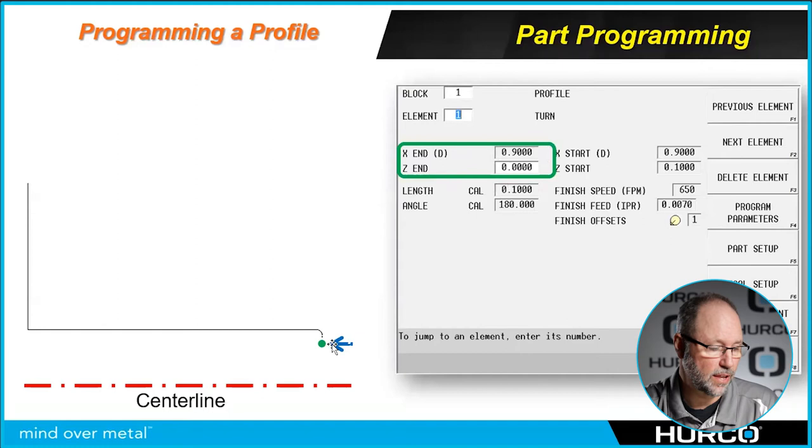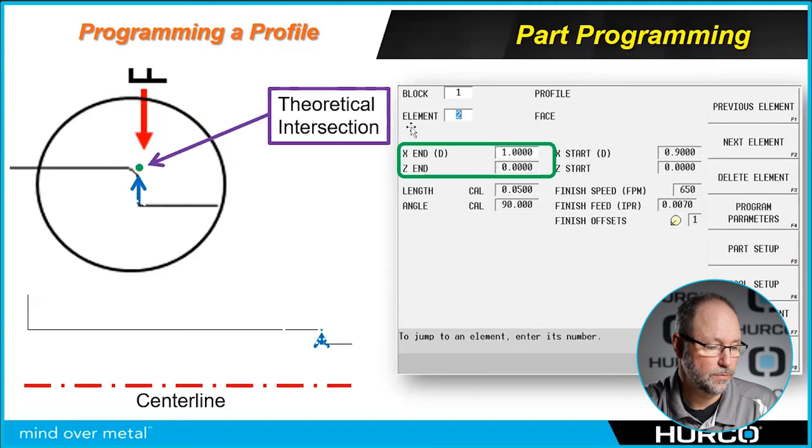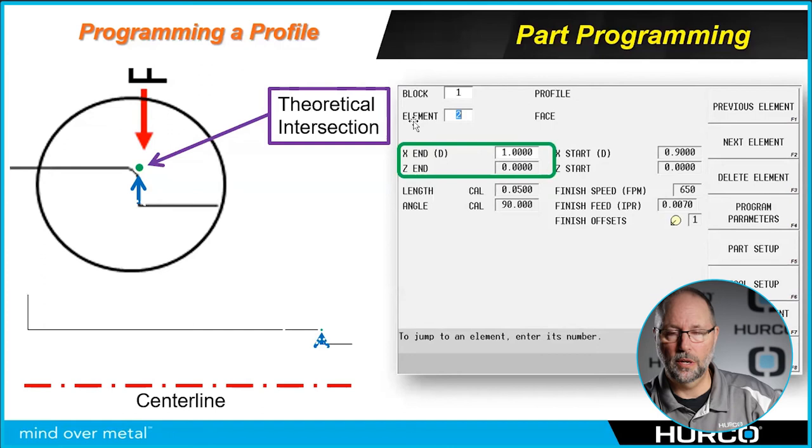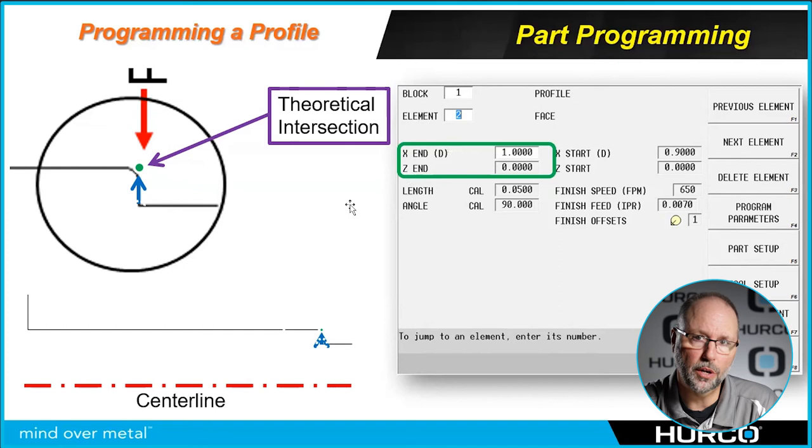Here's our start point. We're going to turn into the face of the part, so we turn from 0.1 to 0, we moved into Z0. We're going to come up the face now. Anything going along the Z axis is a turn, anything going up and down in the X axis is a face.